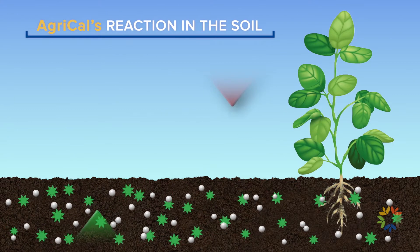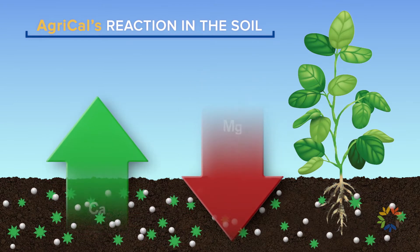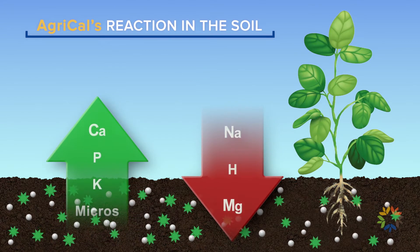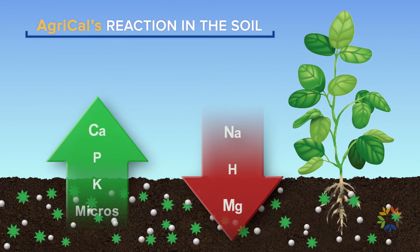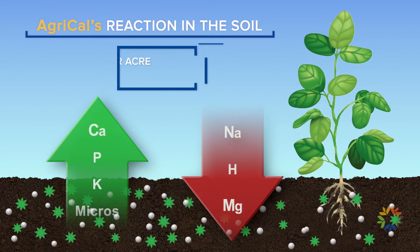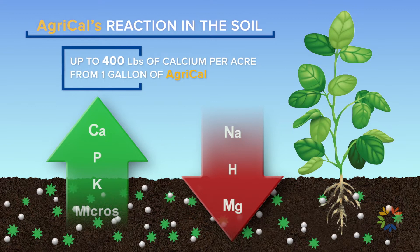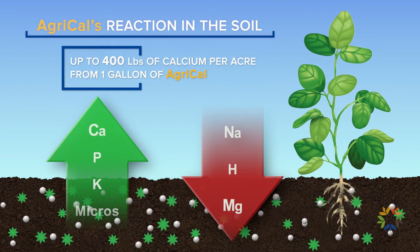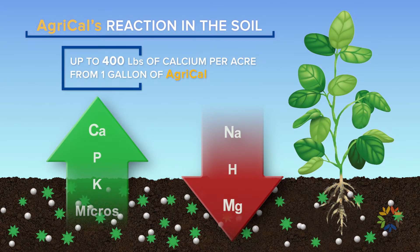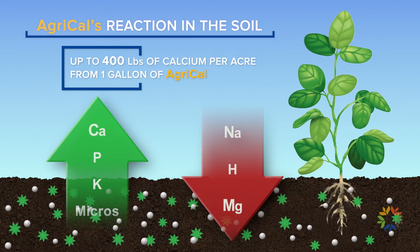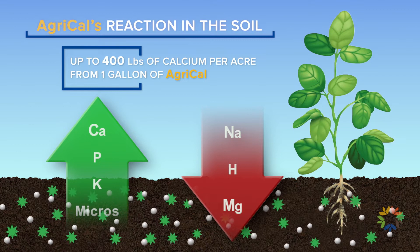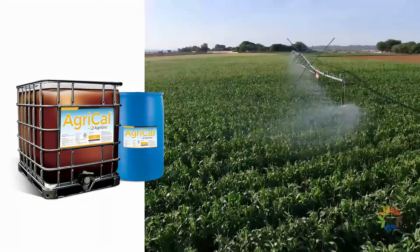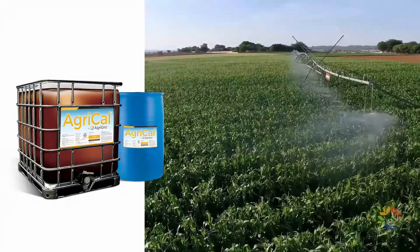Up to 400 pounds per acre of additional soluble calcium has been measured from the application of just one gallon of this formulation. AgriCal can be applied through standard spray or irrigation equipment.